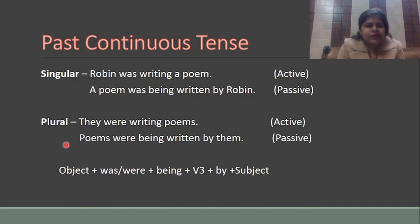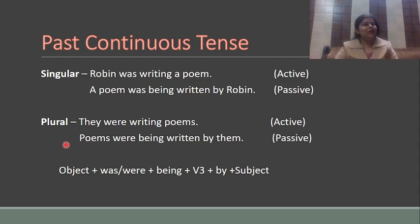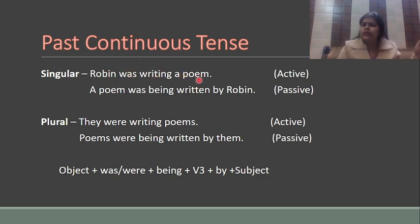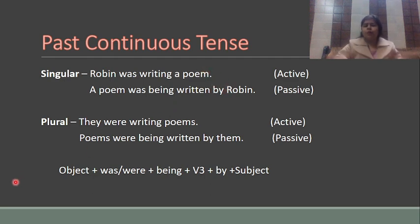Next is past continuous tense — something was continuing in the past. 'Robin was writing a poem' becomes 'A poem was being written by Robin.' For plural: 'They were writing poems' becomes 'Poems were being written by them.' We copy 'was' or 'were,' add 'being,' then the third form of the verb, then 'by,' then the subject. Use 'was' for singular object and 'were' for plural object.